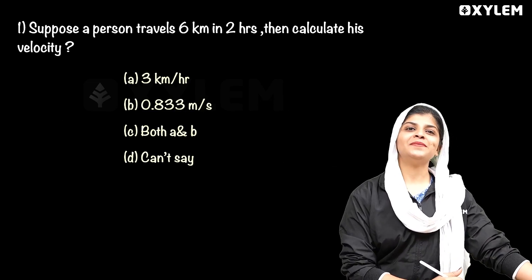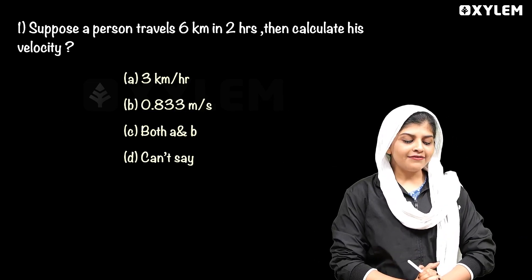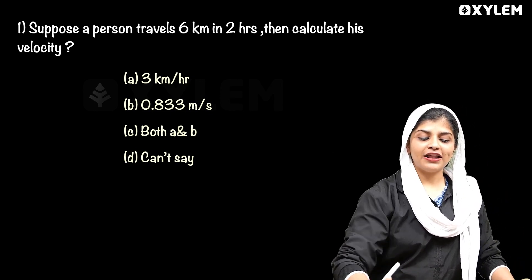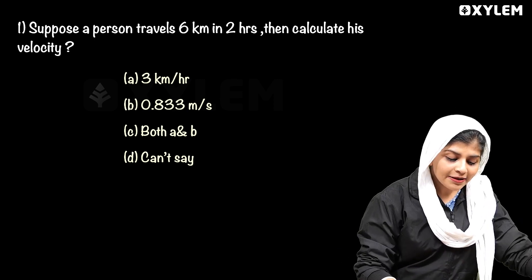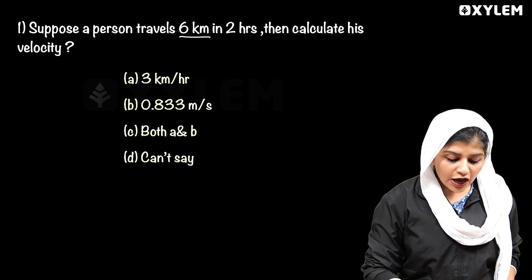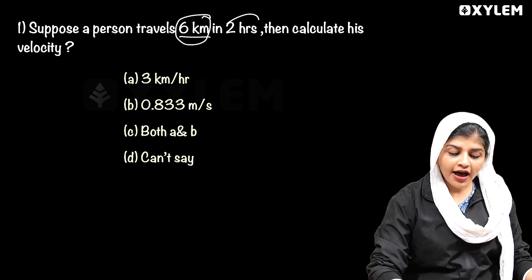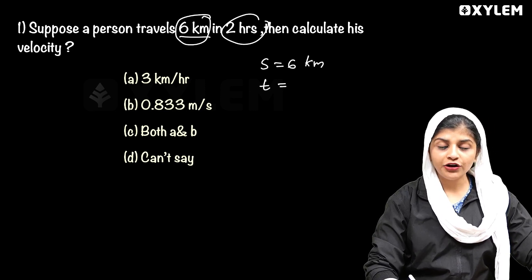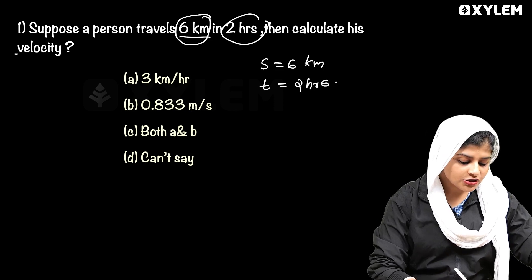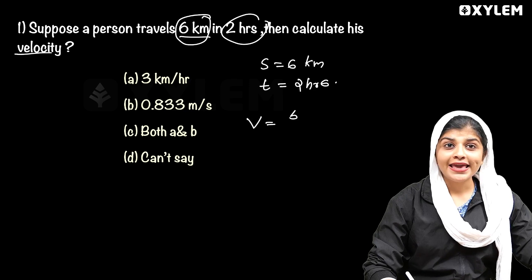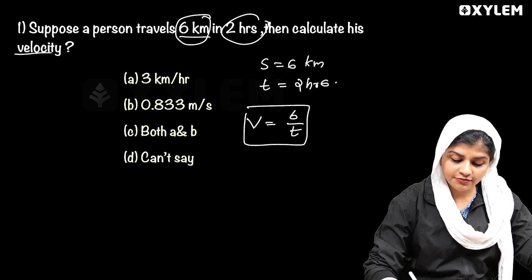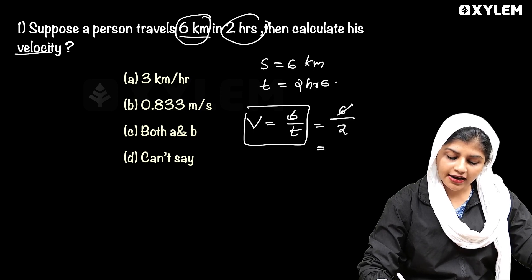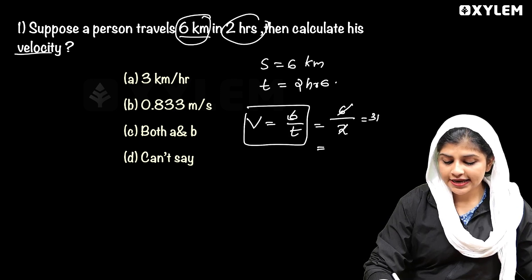So, what is the first question? Suppose a person travels 6 km in 2 hours. Then calculate its velocity. The answer is equal to 6 divided by 2, that is equal to 3 km per hour.